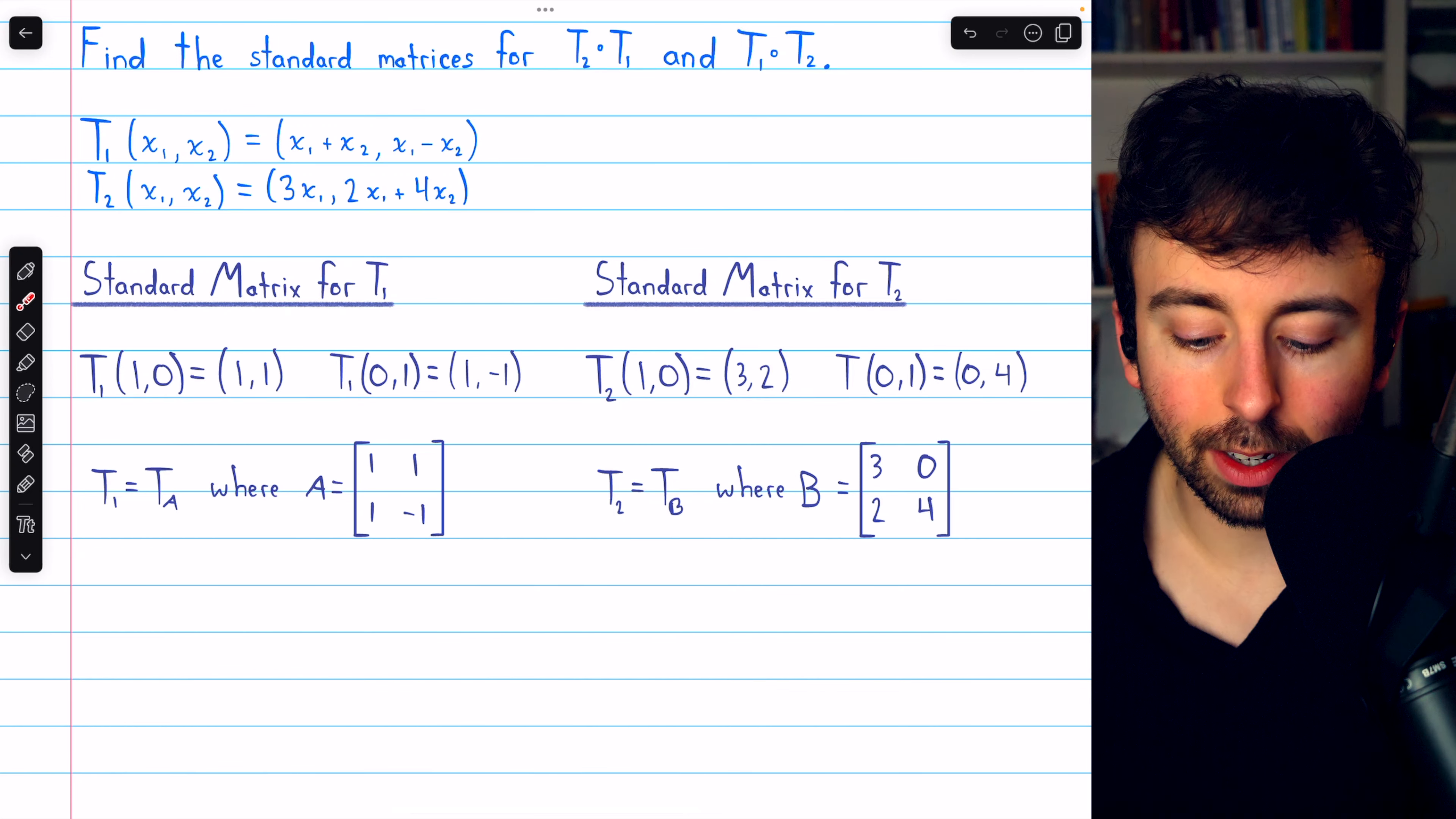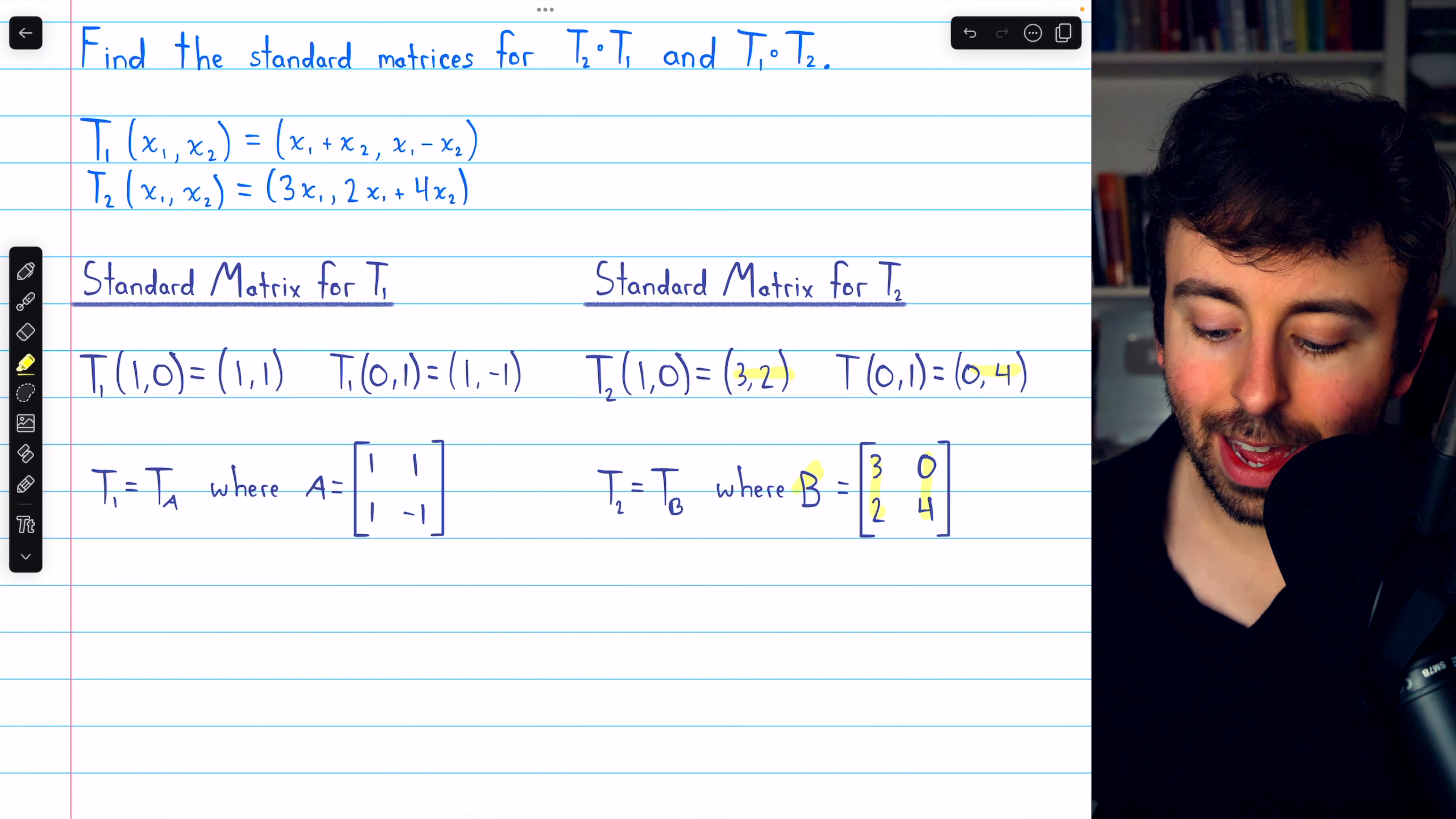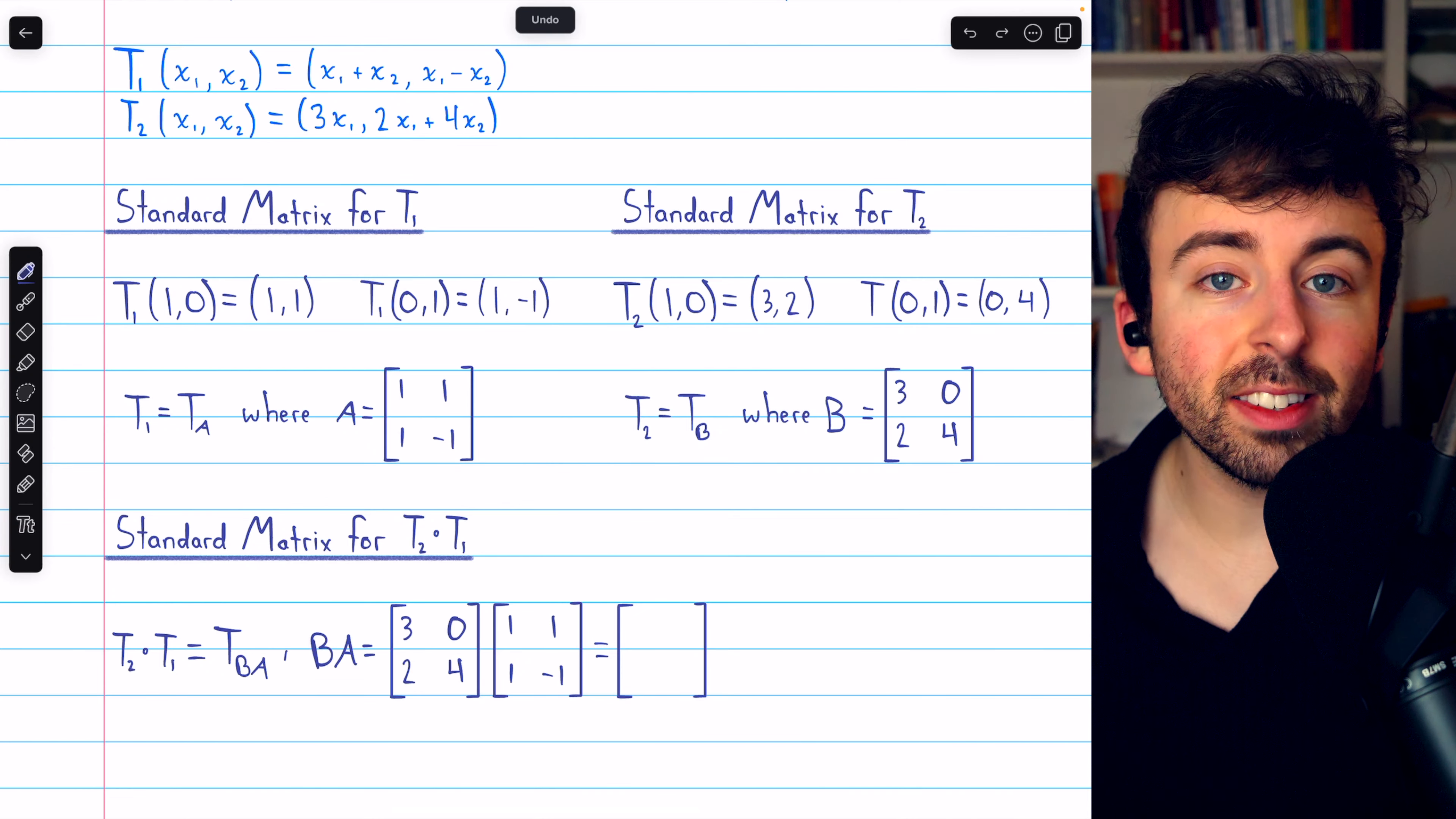we have 3 times x1, producing 3, and then 2 times x1 plus 4 times x2, producing this entry of 2. Once we finish this up, we get 3, 2 as our first column and 0, 4 as our second column. That gives us what we'll call B, the standard matrix for T2.